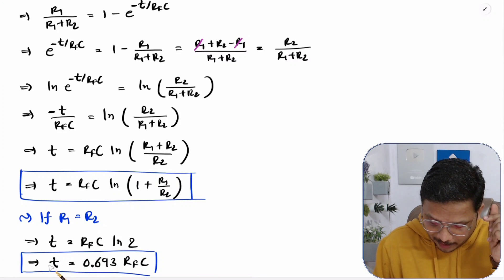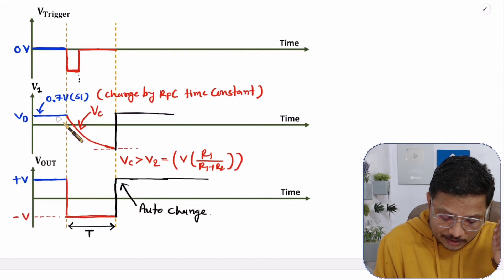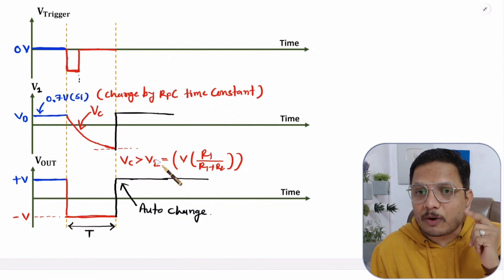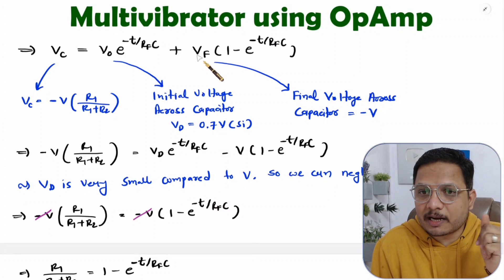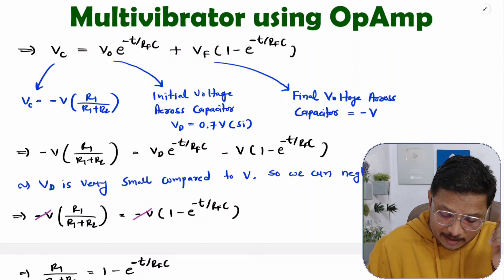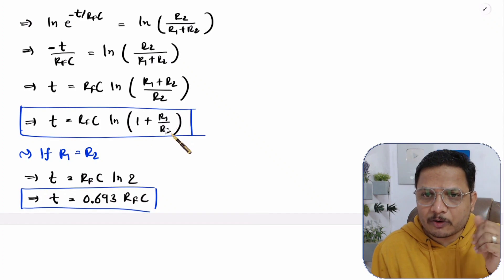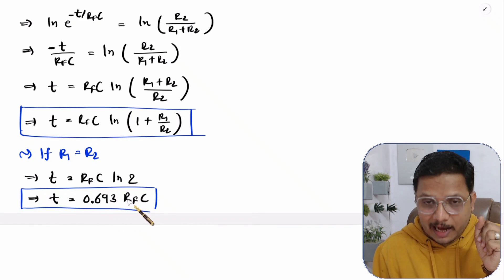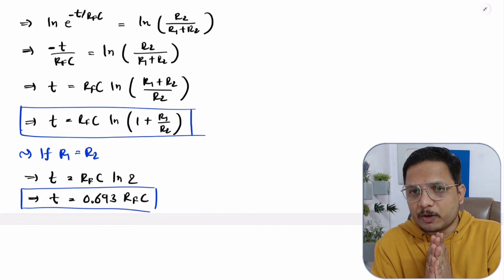That is how we calculate the width of pulse for a monostable multivibrator. To summarize: the initial voltage across the capacitor is Vd; the final voltage the capacitor charges toward is −V; and the transition happens when VC reaches V2 = −V × R1 / (R1 + R2). Based on these facts, when R1 = R2, the width of pulse is 0.693 × RF·C. I hope you have understood. If you have any questions, please note them in the comment section. Thank you so much for watching.